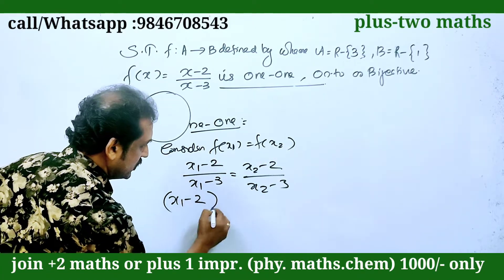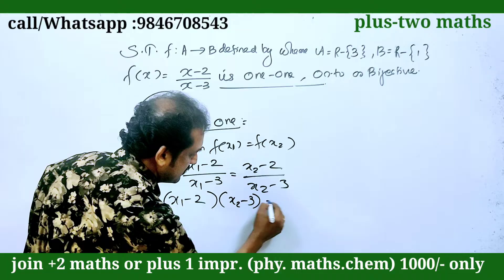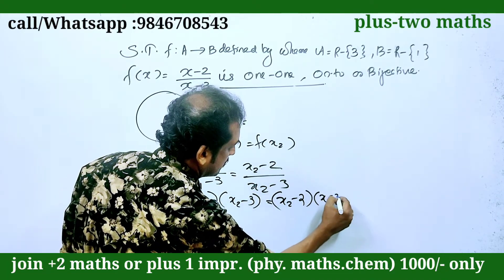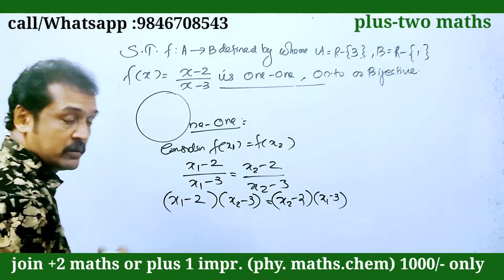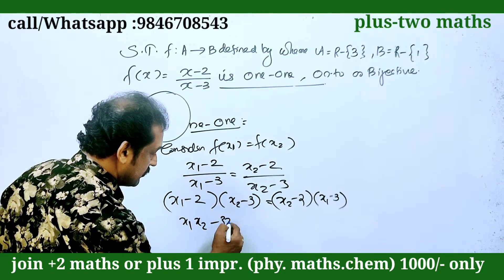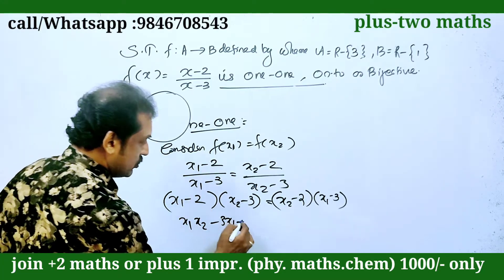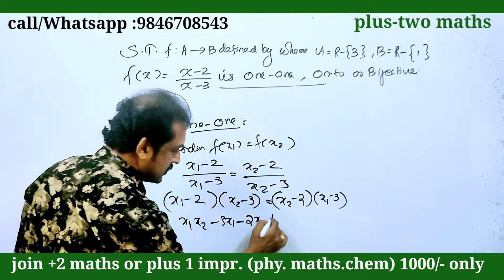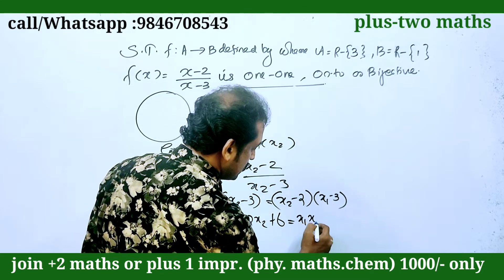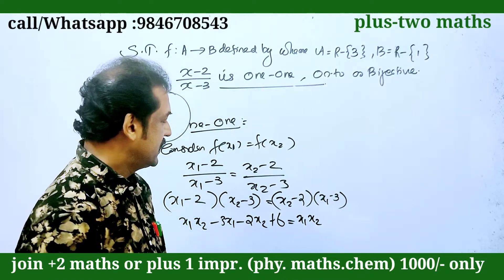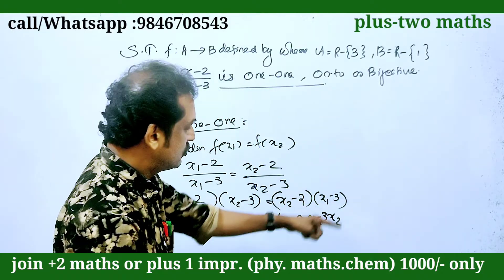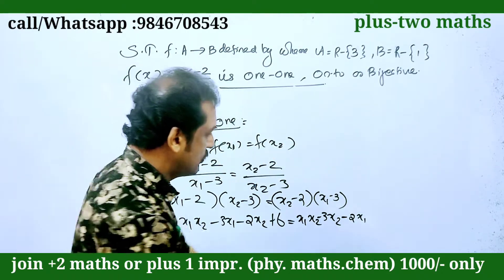x1 minus 2 times x2 minus 3, equals x2 minus 2 times x1 minus 3. Expanding: x1 into x2, x1 into minus 3 is minus 3x1, minus 2 into x2 is minus 2x2, minus 2 into minus 3 is plus 6. Right hand side: x2 into x1 is x1x2, x2 into minus 3 is minus 3x2, minus 2 into x1 is minus 2x1, minus 2 into minus 3 is plus 6.